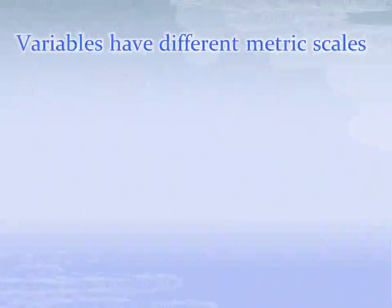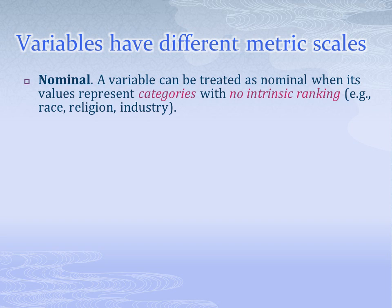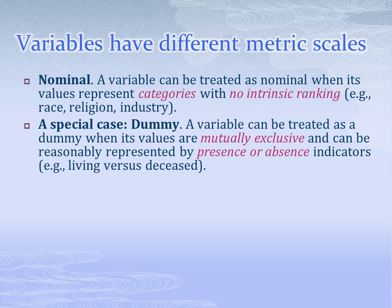There are three main types of variables, each of which we'll discuss in more detail in subsequent slides. The first type is called nominal. Nominal variables are categorical and have no intrinsic ranking. There are also special kinds of nominal variables called dummy variables. These dummies are mutually exclusive categories and have values represented by either a 1 or a 0, indicating presence or absence of the categorical condition.